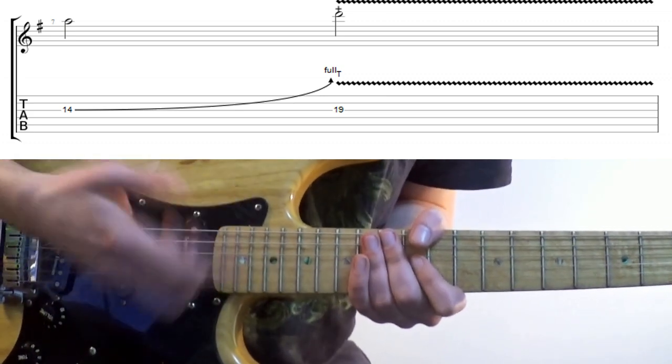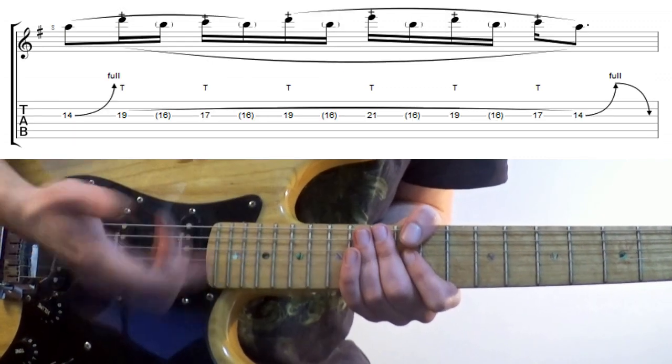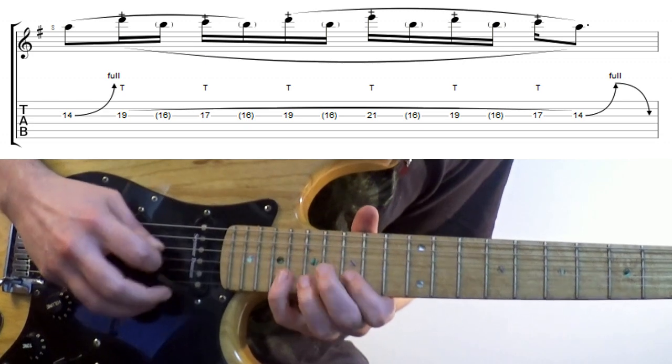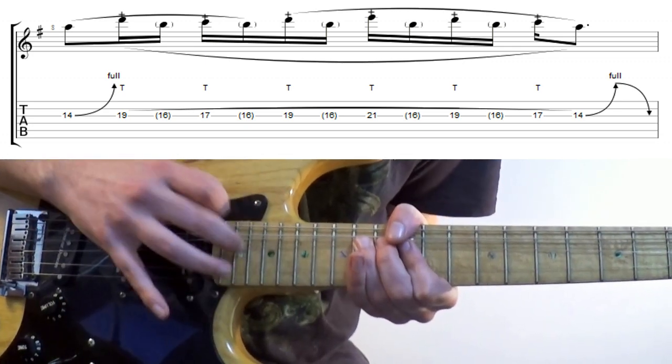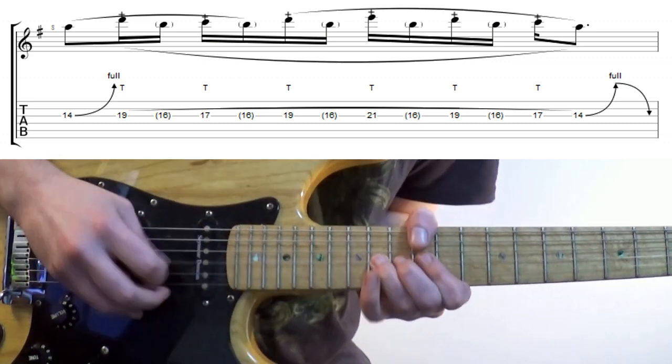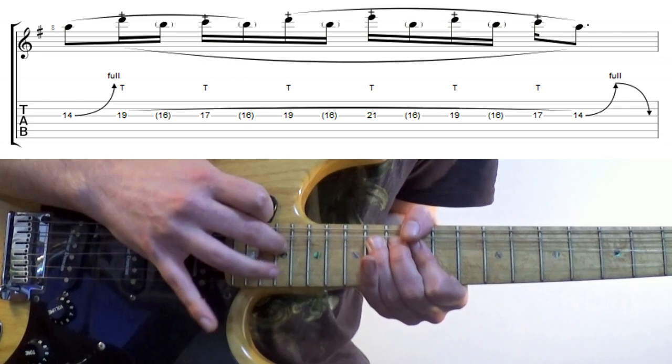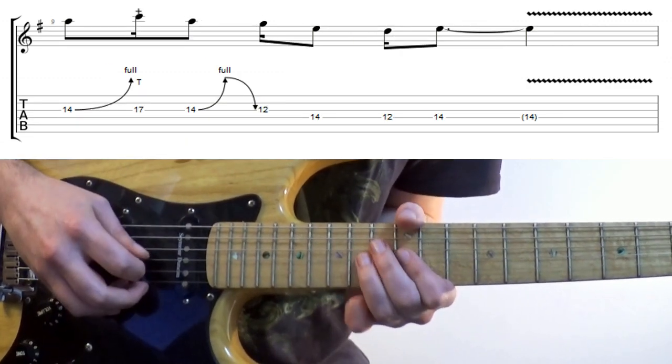There are of course Van Halen licks using the flat 5 and other chromatic notes, but keeping things in key and tapping multiple notes we can get a pedal point type lick. We can also get a way of playing this lick differently.